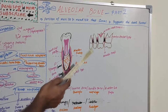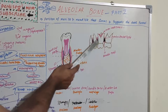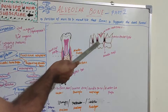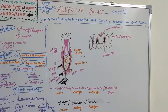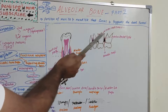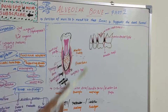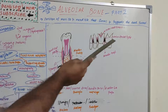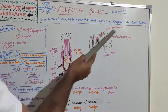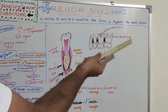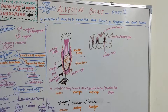Interdental septa are between the roots of two adjacent teeth, whereas interradicular bone is between the roots of multi-rooted teeth.